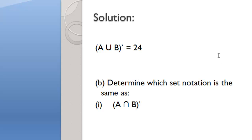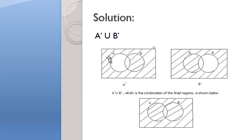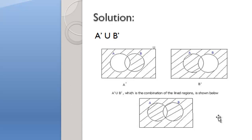Part B asks us to determine which set notation is the same as A intersect B complement. The solution is A complement union B complement. Let's prove it. A complement is everything outside of A — that's the lined region for everything outside of A. B complement is everything outside of B. Now if we combine both these diagrams, we get a diagram that is the same as A intersect B complement. Our answer is A complement union B complement.